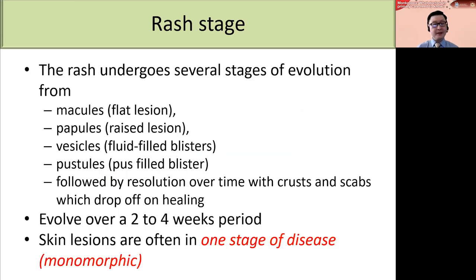The rash in monkeypox will undergo several stages of evolution: from macules, which are flat lesions, to papules, raised lesions, to vesicles — fluid-filled blisters — and then pustules, pus-filled blisters. This is followed by resolution with crust and scab formation, and eventually they drop off on healing. The whole evolution takes around two to four weeks. The skin lesion in monkeypox is often a one-stage disease, or a monomorphic condition, meaning the rash goes through the same evolution at the same time, so when you examine the patient, the rash will look similar.